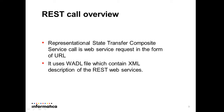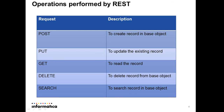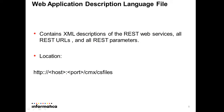REST composite service calls allow you to create a custom user interface that runs JavaScript to make REST calls. The MDM hub assigns a unique URL for each base object in a composite object. You can use the unique URL to identify which base object to upload or delete. For that we use the web application description language, which contains XML descriptions of the REST web services. Operations performed by REST: POST creates a record, PUT updates existing base records, GET reads a record, DELETE deletes a record, and search is used to search records.